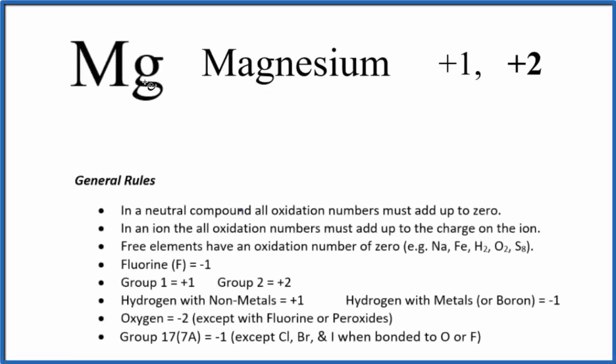In this video we'll look at the oxidation number for magnesium. First off, there's no positive or negative sign after the Mg. It's a neutral element, and if we have neutral substances, all the oxidation numbers add up to zero. So this has to have an oxidation number of zero.